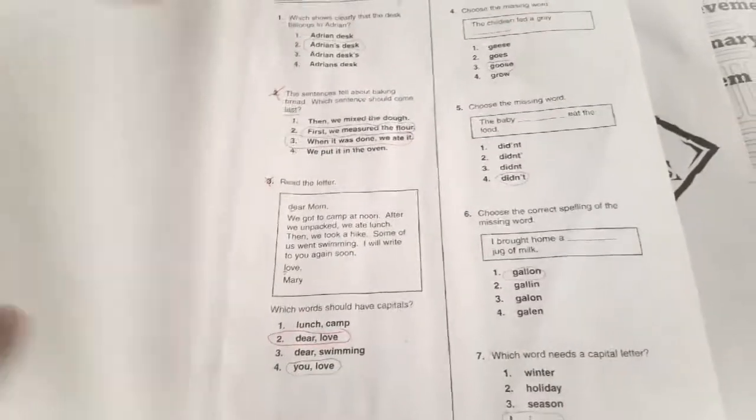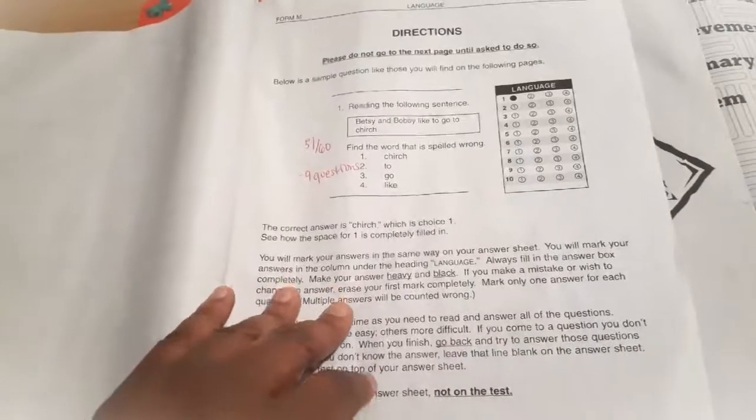Over here on the language, I think he missed nine. He did the 23rd section of this one. Yep, he did the 23rd section of this one, and this is how the test looked as well. So he missed nine. He got 51 out of 60 on here.